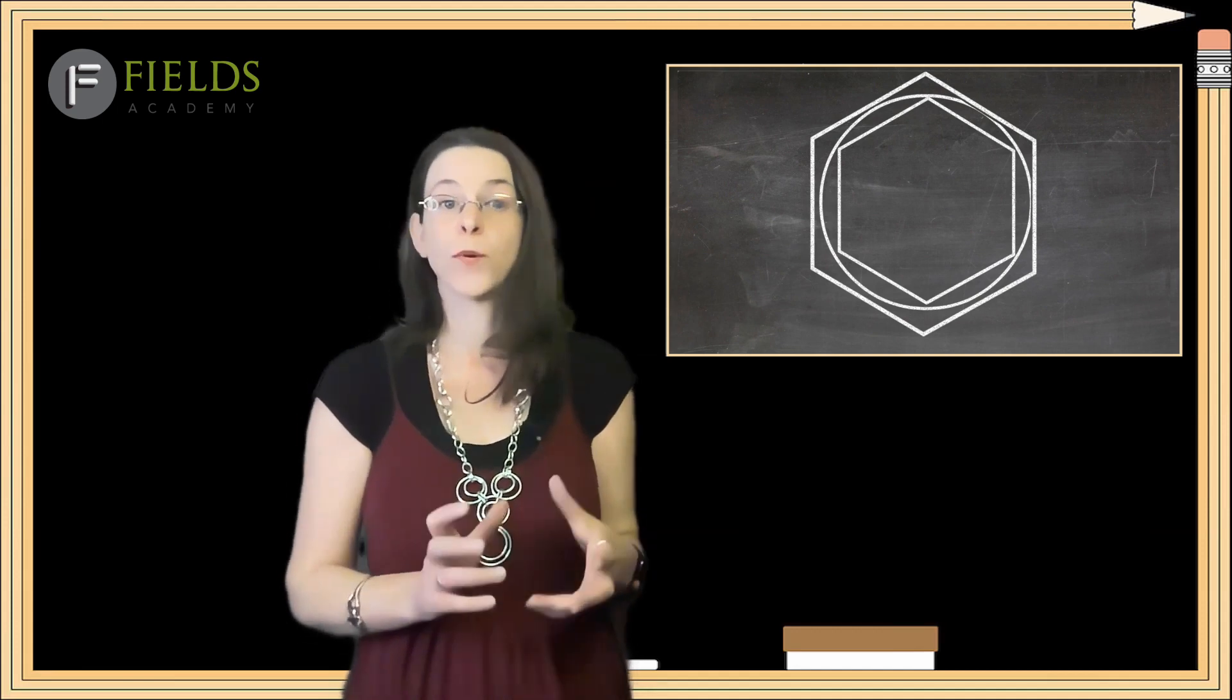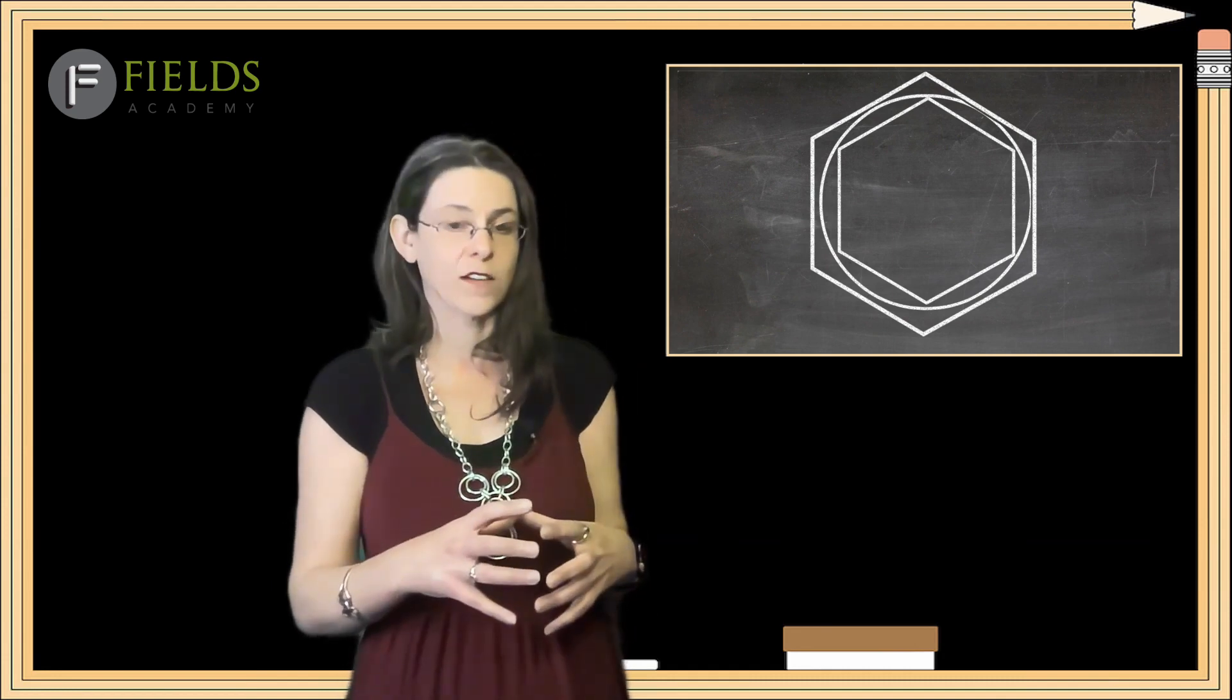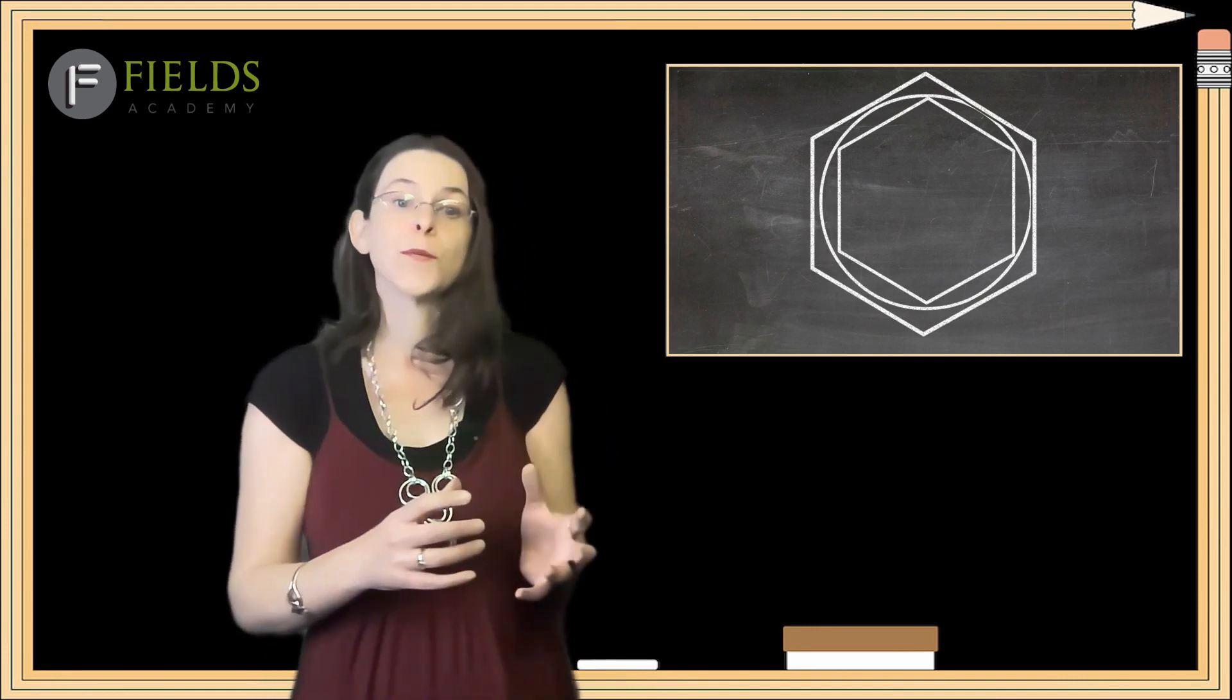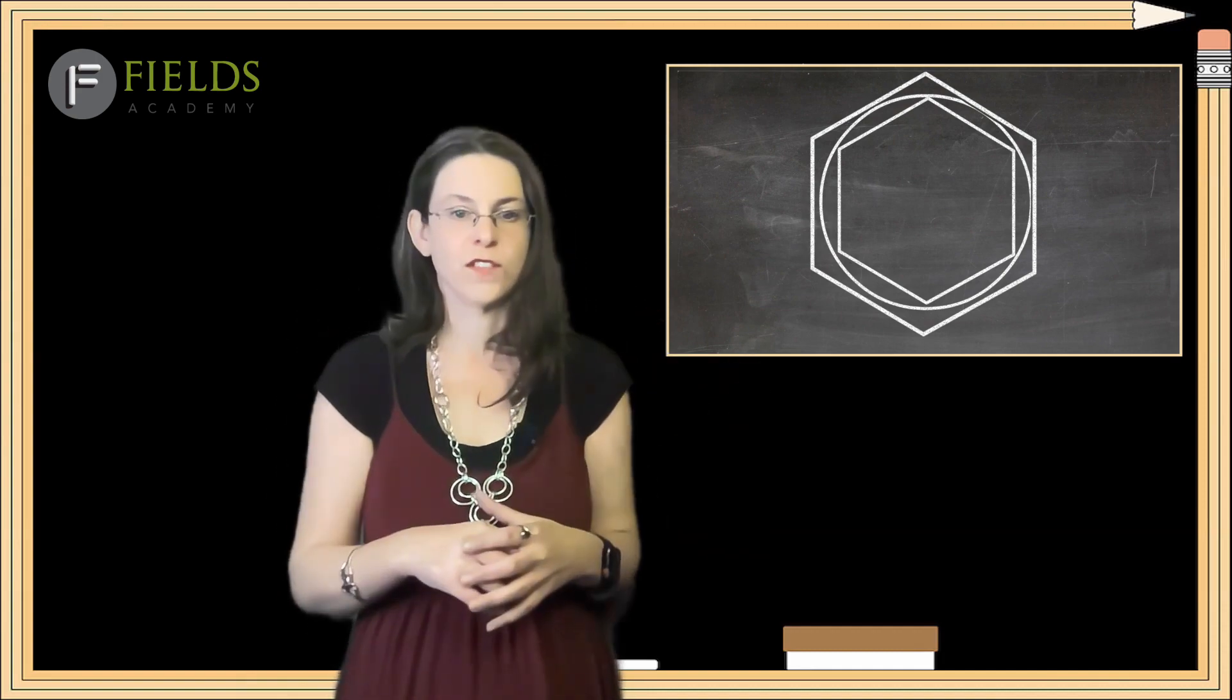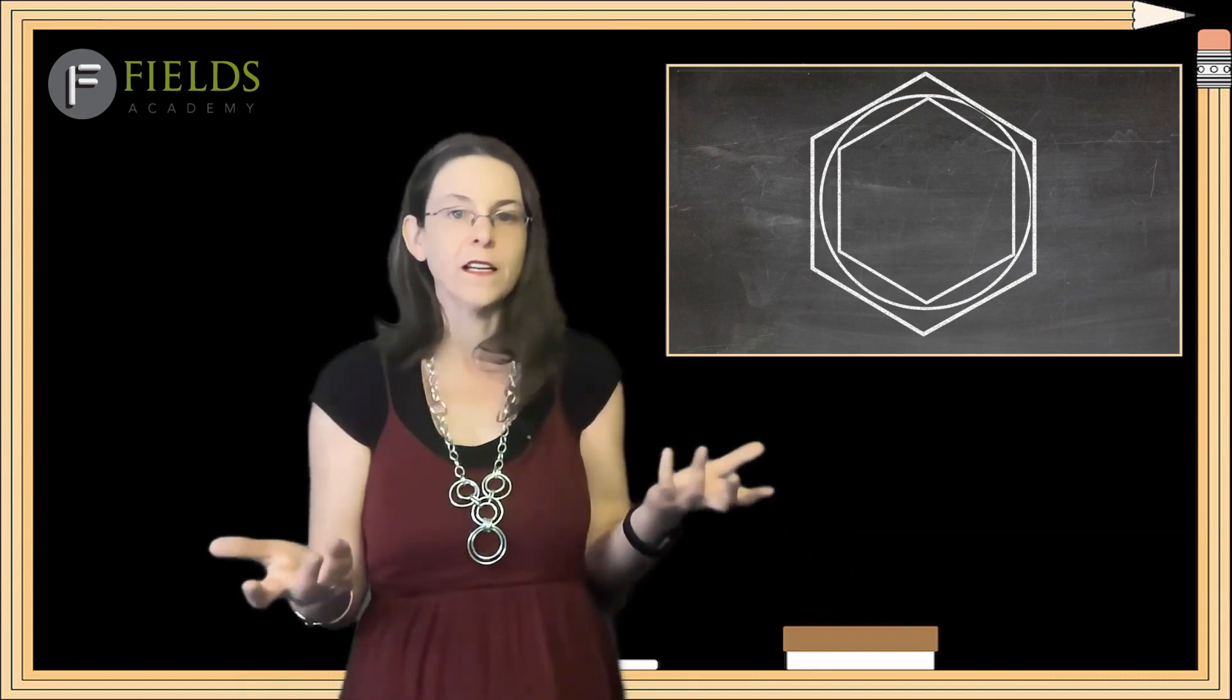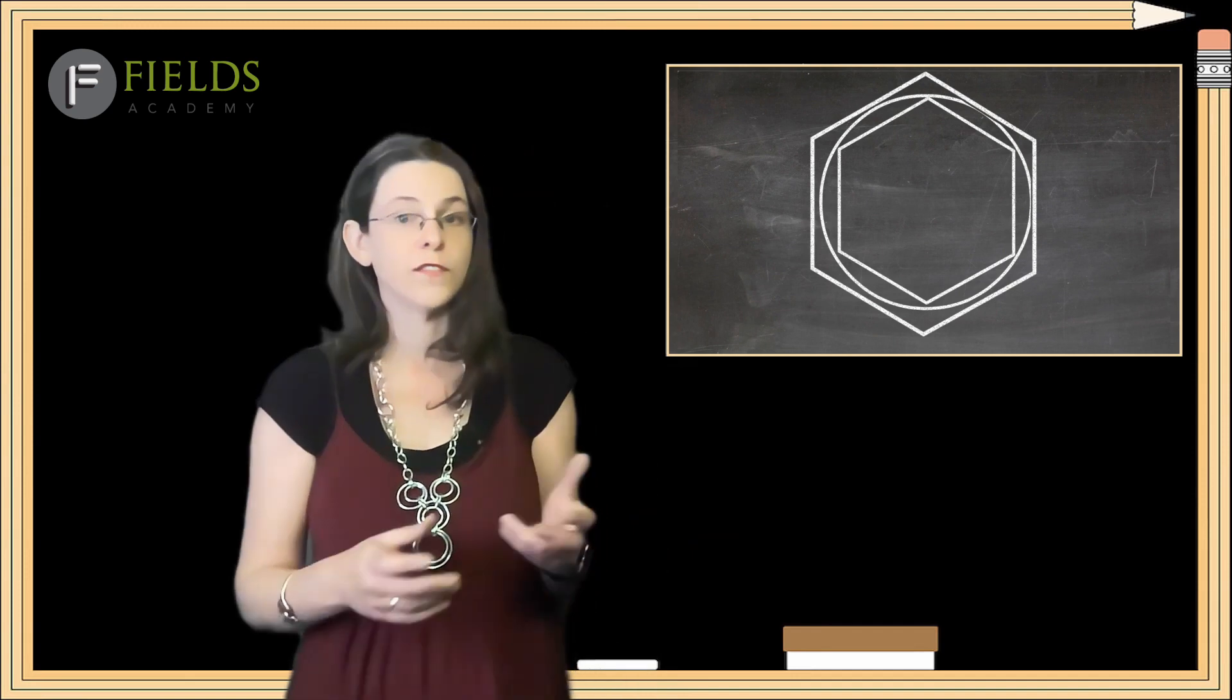He was then able to calculate the perimeter of the two hexagons using different geometric principles of the time, and concluded that the perimeter of the inside hexagon would be slightly less than the circumference of the circle, as it's smaller, because it's inside. And the perimeter of the outside hexagon would be slightly bigger than the circumference of the circle, because it was on the outside and bigger. So, the circumference of the circle had to be somewhere between the two hexagons. He could then estimate what the value of pi was, meaning the circumference of the circle divided by its diameter.